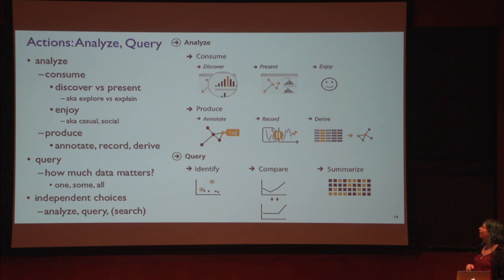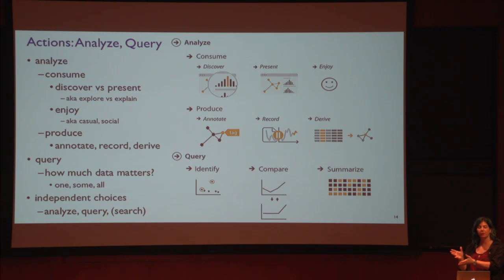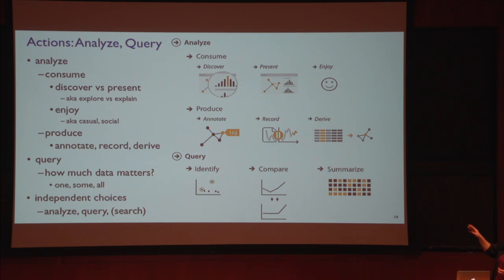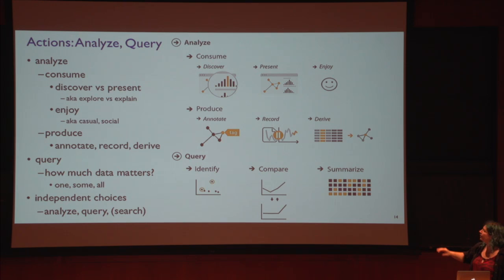Another abstract question to think about: for any of those analyze cases, how much of the data matters to answer the question? Am I trying to find one thing — the needle amidst the haystack? Am I trying to compare two or a small number of things? Often the support you need for identifying is necessary but not sufficient for comparing. Or is it actually important for your question to summarize the entire thing? You can think separately about how many things matter and how you're trying to analyze it.